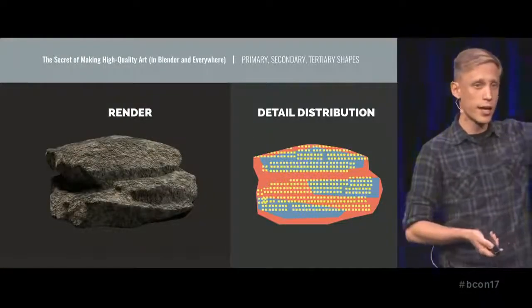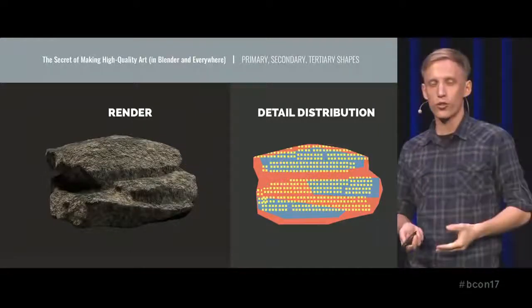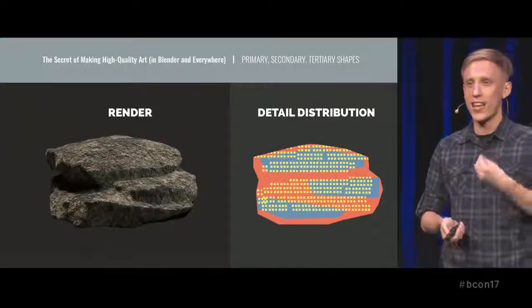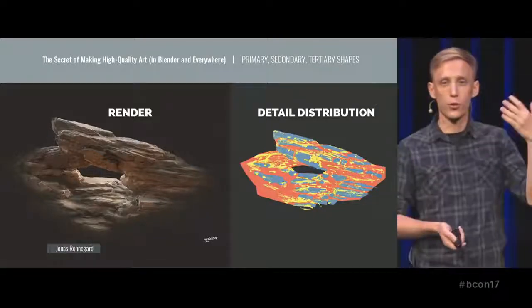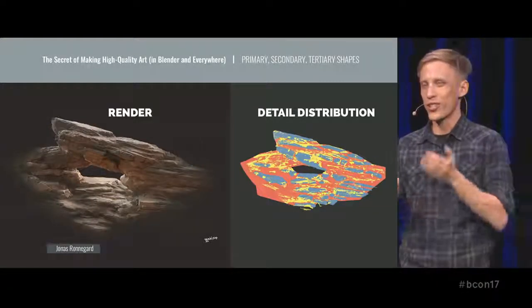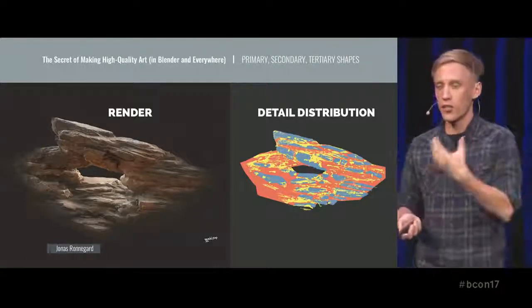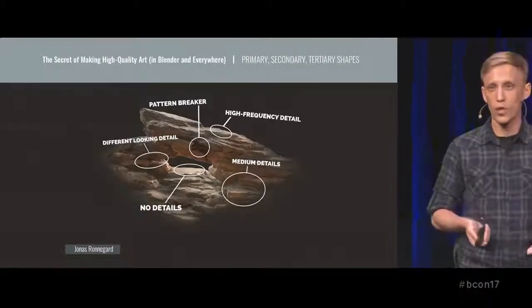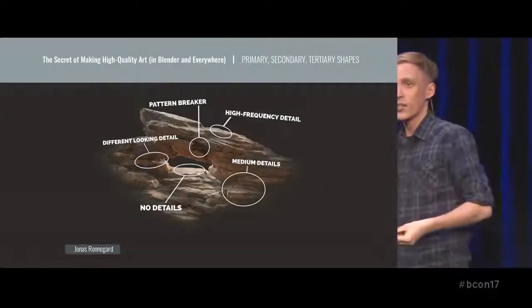Here you can see the primary shape broken down into three rather boring slabs, and also an abundance of small shapes spread out uniformly across the image. That uniform distribution is really uncomfortable to look at — it doesn't give the eye any spot to rest and doesn't have enough variety to keep us looking. This distribution of shapes, on the other hand, looks much more enjoyable. We see areas of high-frequency details, areas with practically no details, medium shapes, different-looking medium shapes, pattern breakers — and it really adds dynamics and visual interest.